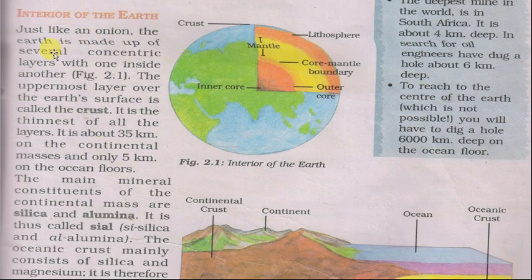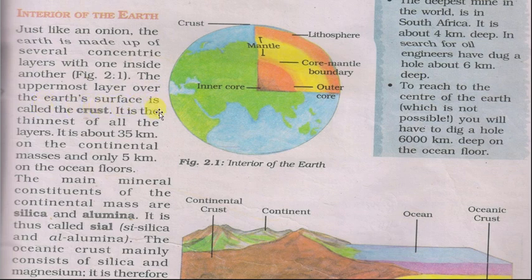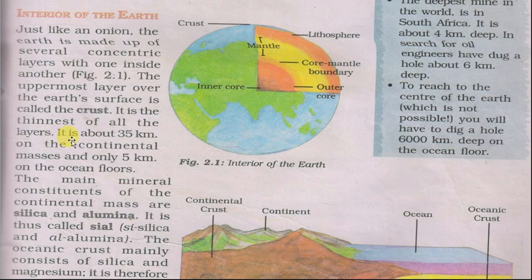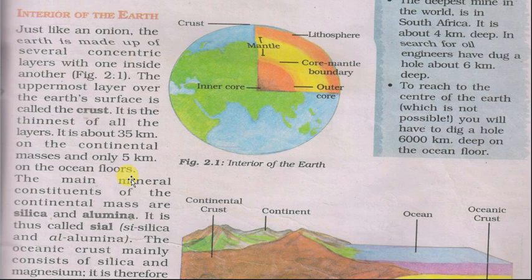Interior of the Earth — Prathvi ka aantrik bhaag. Just like an onion, the Earth is made up of several concentric layers with one inside another. The uppermost layer over the Earth's surface is called the crust. It is the thinnest of all layers — about 35 km on continental masses and only 5 km on the ocean floor.